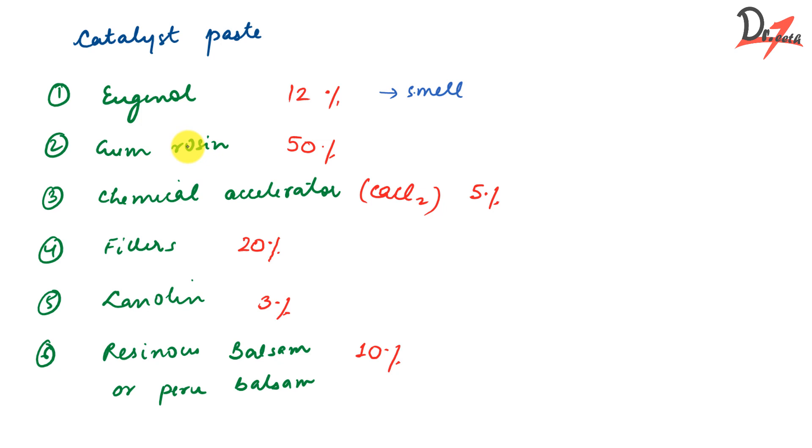So let me just quickly jot it down here in a different color. So eugenol is an active ingredient. Gum rosin gives coherency and also makes it thermoplastic.